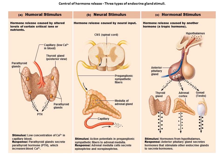The second case is neural stimulus, which involves nerve fibers stimulating hormone release. Sympathetic nervous system fibers stimulate the adrenal medulla to secrete norepinephrine and epinephrine into the blood.